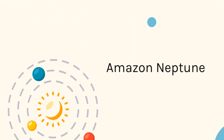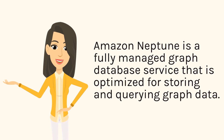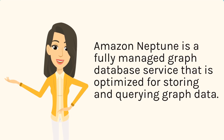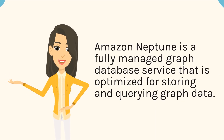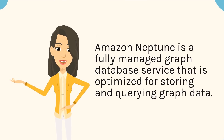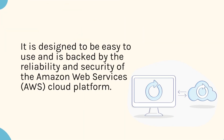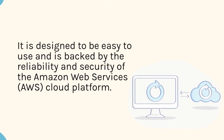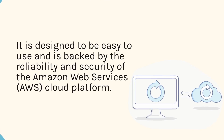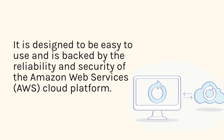Amazon Neptune is a fully managed graph database service that is optimized for storing and querying graph data. It is designed to be easy to use and is backed by the reliability and security of the Amazon Web Services (AWS) cloud platform.